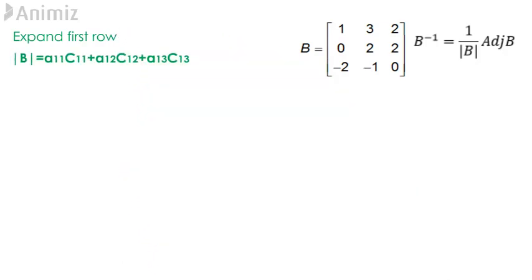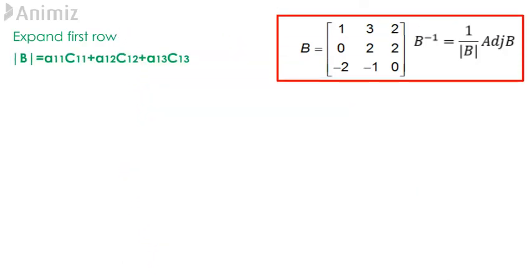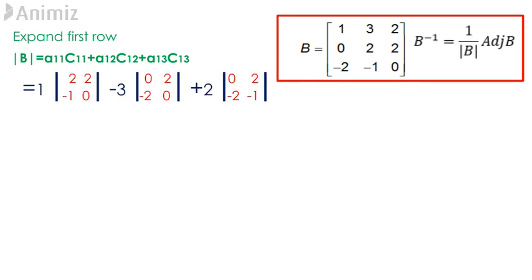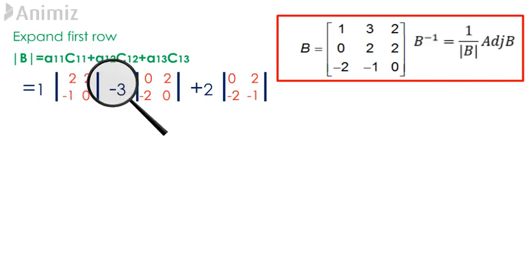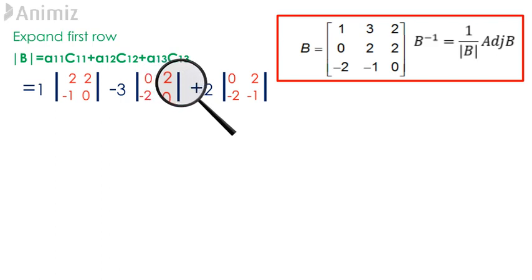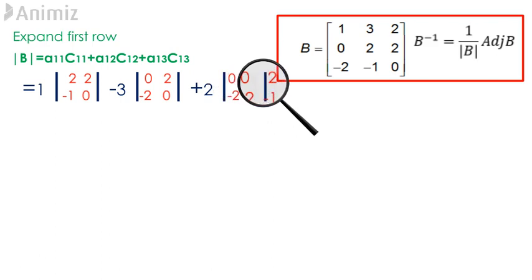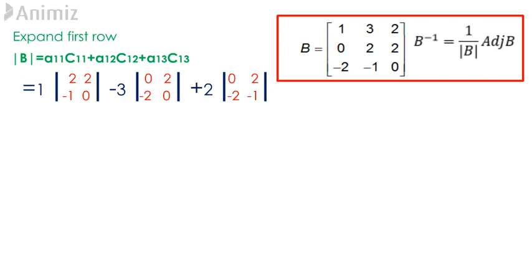Let's expand the cofactors of the first row for this question. Doing this gives us 1 multiplied by the determinant of elements 2, 2, negative 1, 0, minus 3 multiplied by the determinant of elements 0, 2, negative 2, 0, plus 2 multiplied by the determinant of elements 0, 2, negative 2, negative 1. Computing this gives us 1 times 0 plus 2, minus 3 times 0 plus 4, plus 2 times 0 plus 4, giving us the determinant of B equal to negative 2.